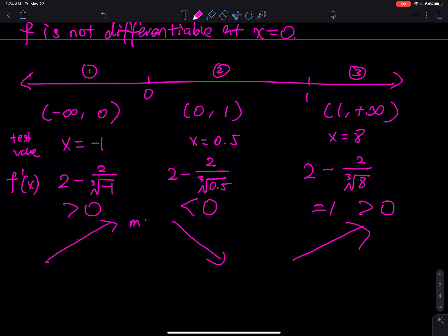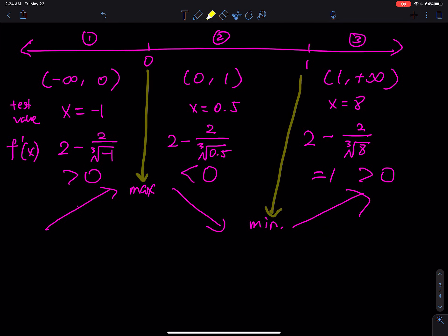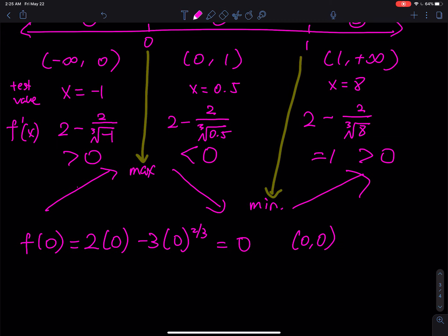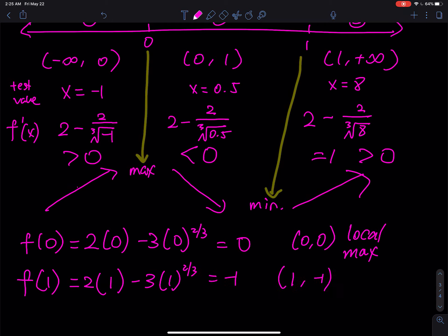The slope pattern is: positive (increasing), negative (decreasing), positive (increasing). So x = 0 is a local max and x = 1 is a local min. Plugging back into f: f(0) = 2(0) − 3(0)^(2/3) = 0, so (0, 0) is a local max. f(1) = 2(1) − 3(1)^(2/3) = 2 − 3 = −1, so (1, −1) is a local minimum.